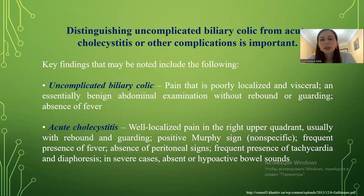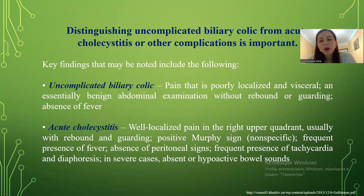Distinguishing uncomplicated biliary colic from acute cholecystitis: In uncomplicated biliary colic, the pain is visceral and essentially benign on abdominal examination, without rebound or guarding, and there is an absence of fever. In acute cholecystitis, there is well-localized pain in the right upper quadrant, usually with rebound and guarding, positive Murphy's sign, frequent presence of fever, absence of peritoneal signs, frequent presence of tachycardia and diaphoresis, and in severe cases, absence of or hypoactive bowel sounds.